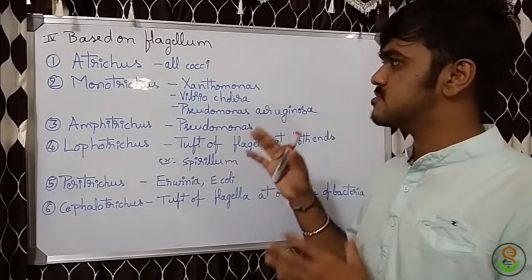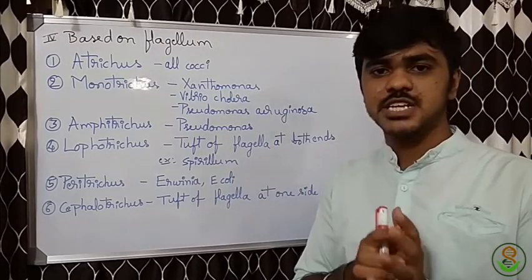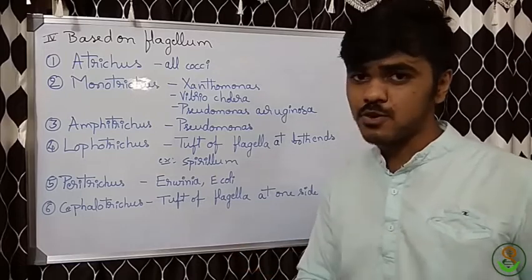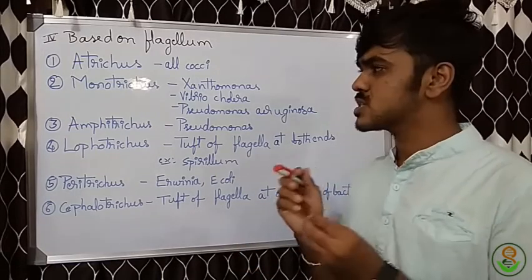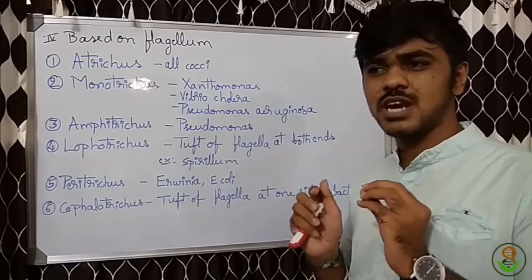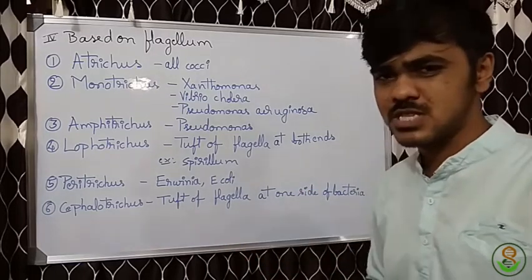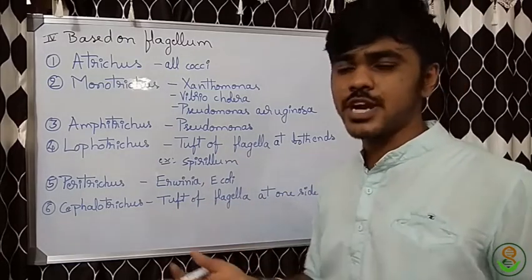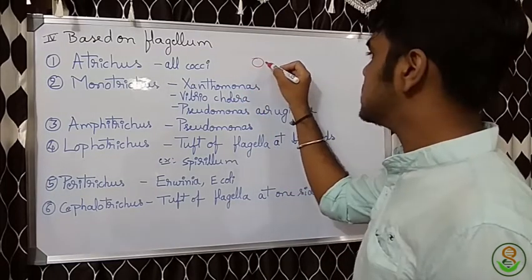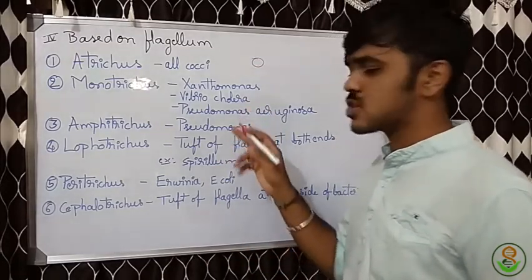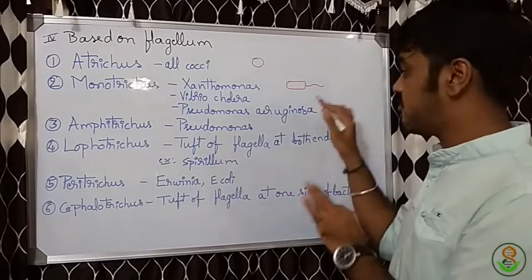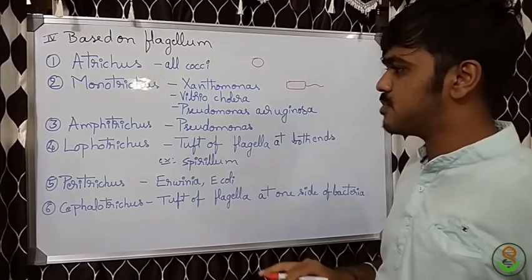Now let's see the types based on flagellum — some bacteria possess flagella in different arrangements. It is very simple, just understand what each name indicates. Atrichous means no flagella at all — these bacteria do not contain any flagella. Monotrichous — as in Xanthomonas and Vibrio — means there is only one flagellum, which will be lengthy, so only one flagellum is present.